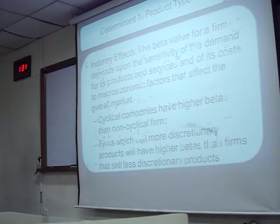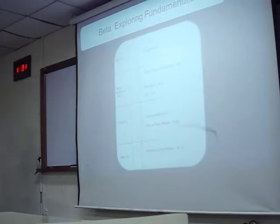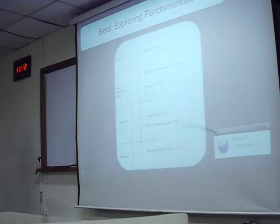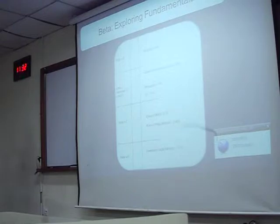Last time we were talking about the fundamentals of beta. The first fundamental is the product type — what kind of product is your company making? Is your company making a product which people need for their life, or are they making a product which people don't need for their life?